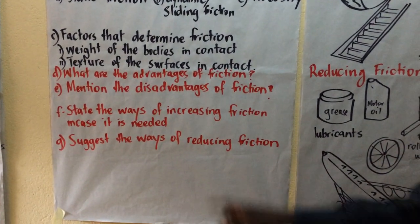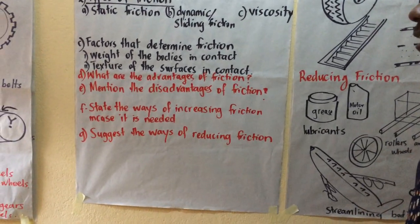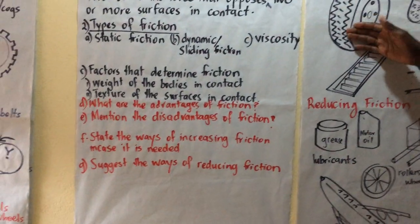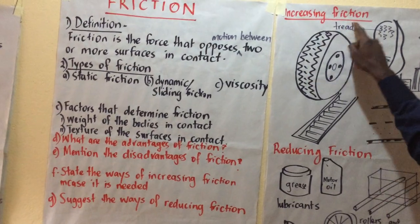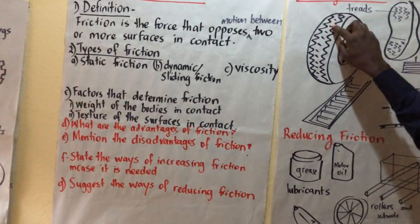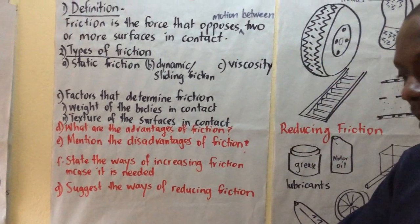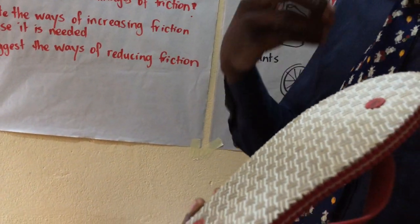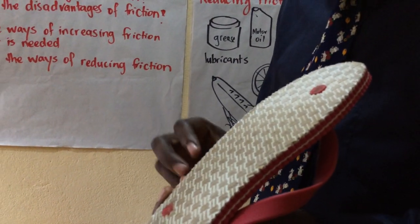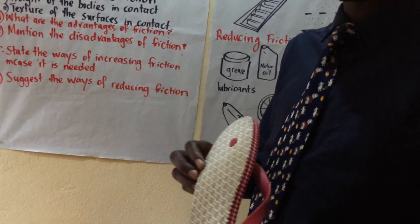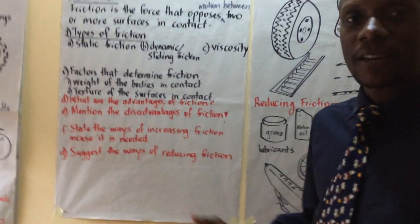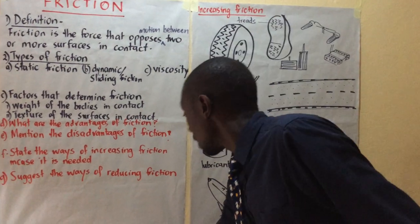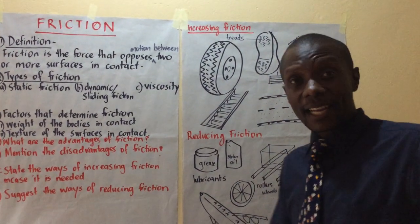Ways of increasing friction: we need friction for movement and braking. For vehicle tires and shoe soles, threads are put on them — those grooved patterns. I have a sandal here — you can see the threads. There are different sizes and designs of threads depending on purpose; engineers' boots have thicker treads. These are ways of making smooth surfaces rougher to increase friction.